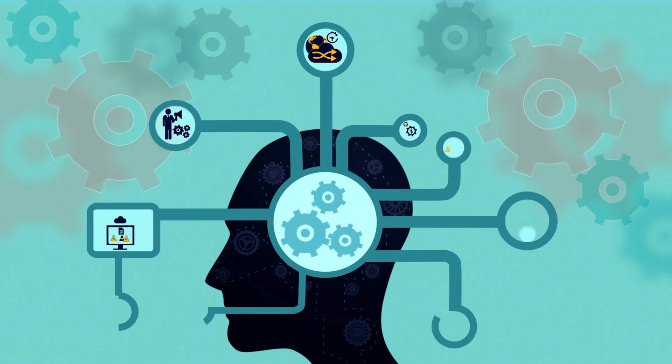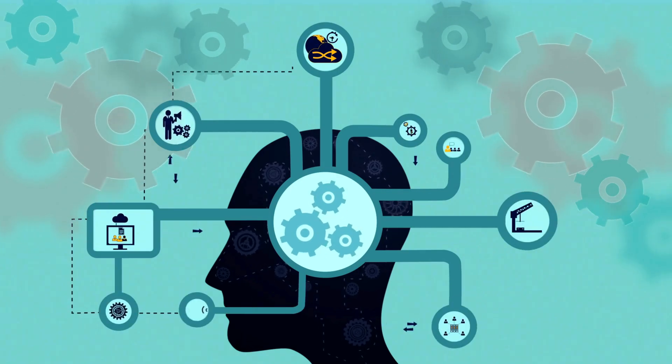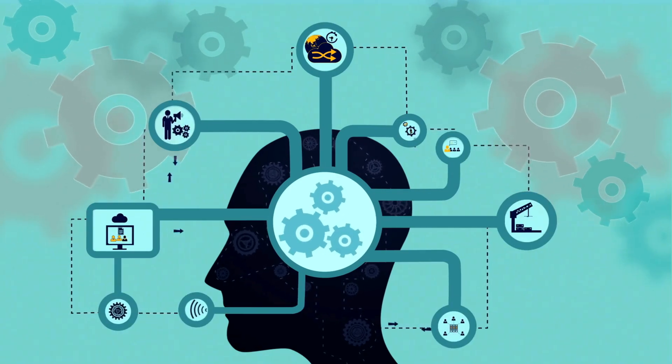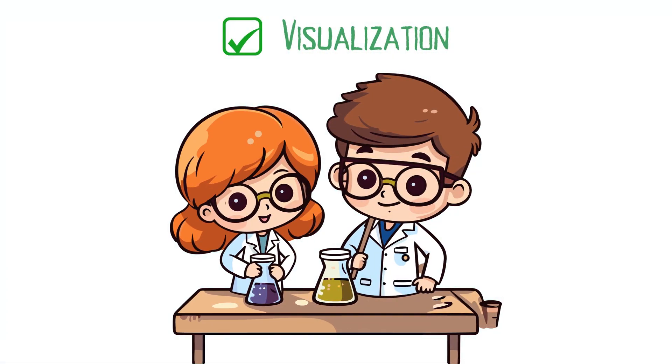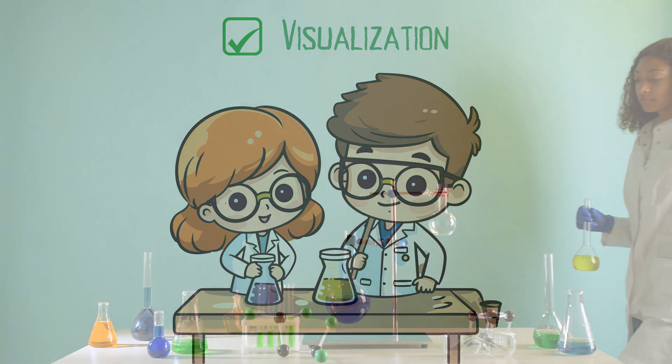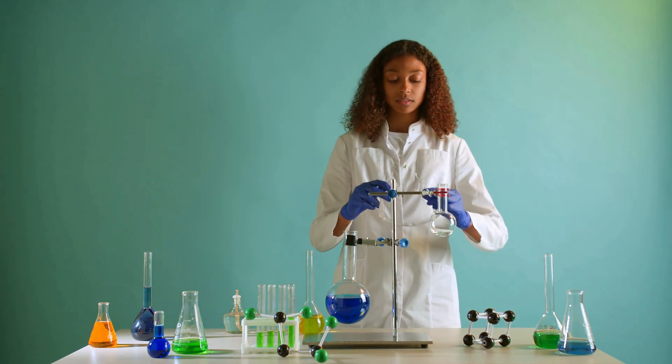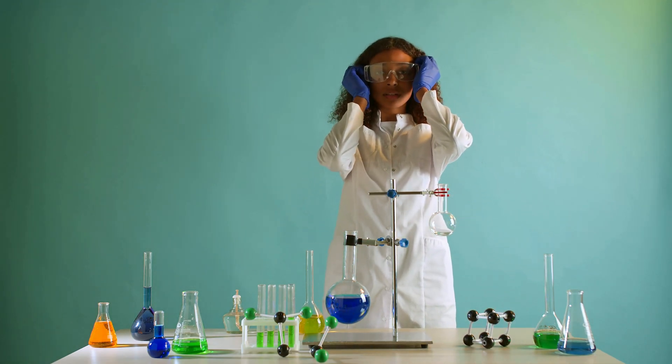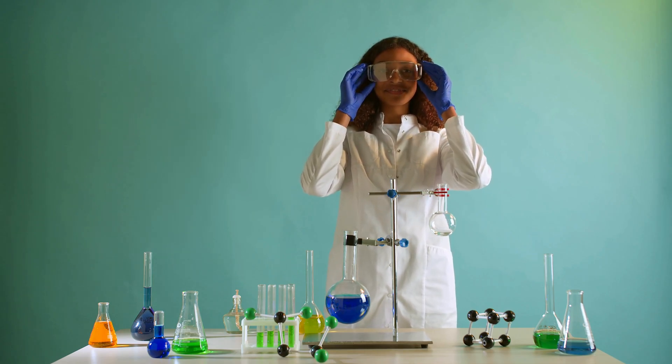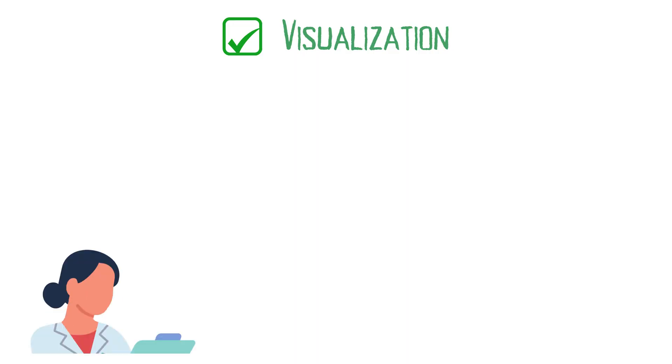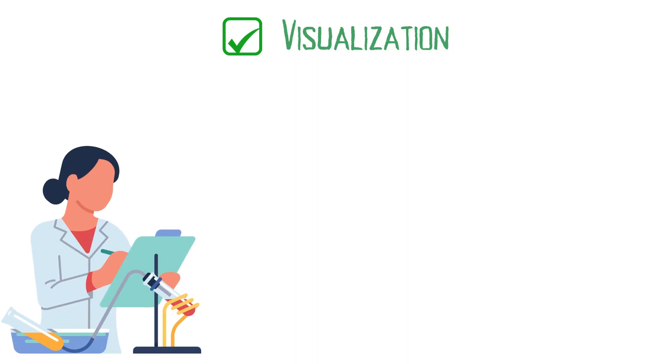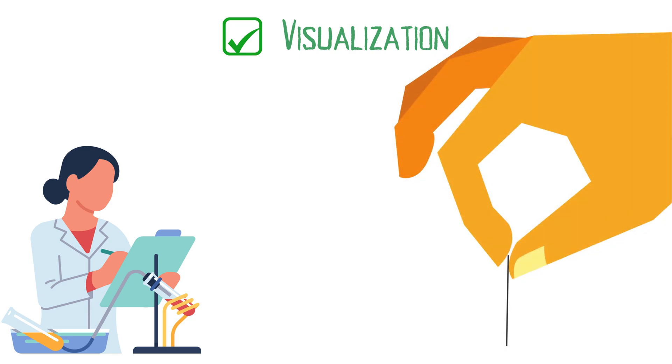Visualization is a versatile technique that can be applied to many types of information. Let's explore some advanced examples. Suppose you're trying to remember a complex process, such as the steps in a scientific experiment. Create a detailed mental image of each step, using vivid colors and dramatic actions. For example, if the first step is adding a chemical to a beaker, imagine a giant hand pouring a glowing liquid into a sparkling beaker. The more detailed and imaginative the image, the easier it will be to recall.